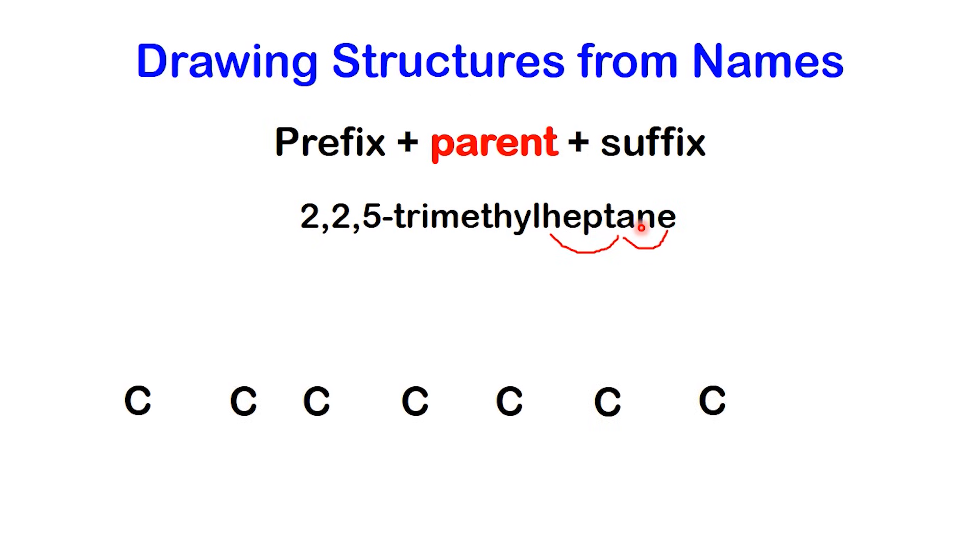The ending ane is the suffix for alkanes, which means all of those carbons are connected by single bonds. So our backbone is a straight chain of seven carbons.